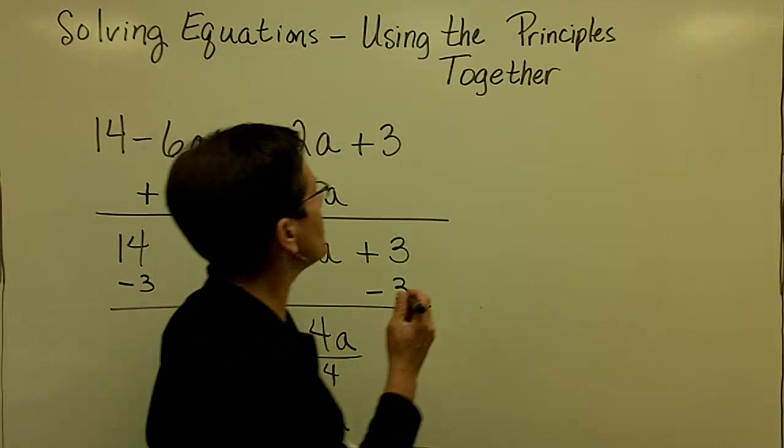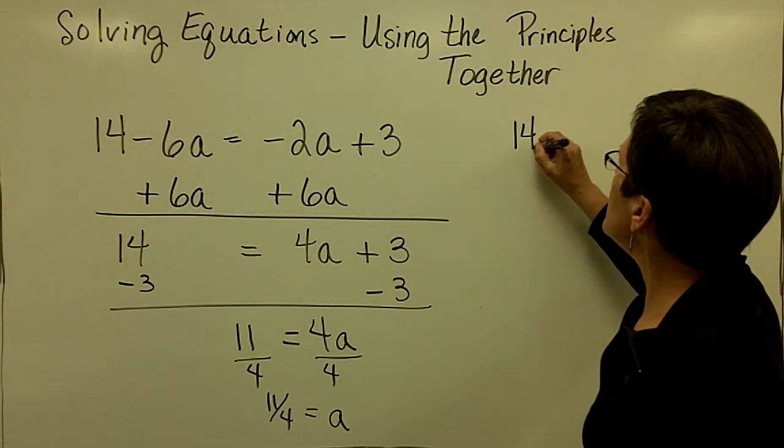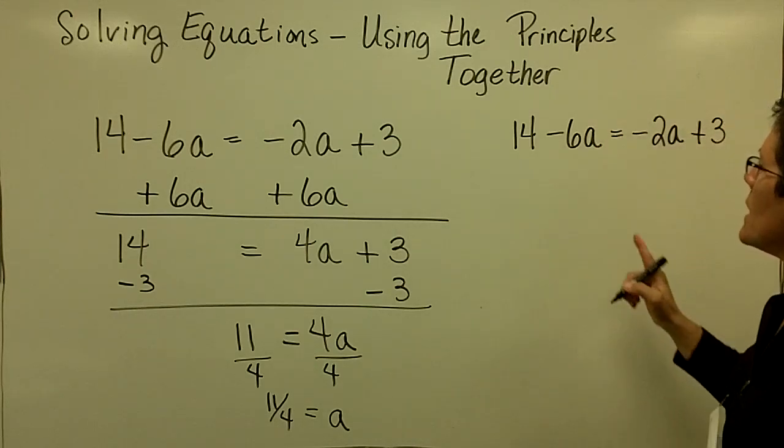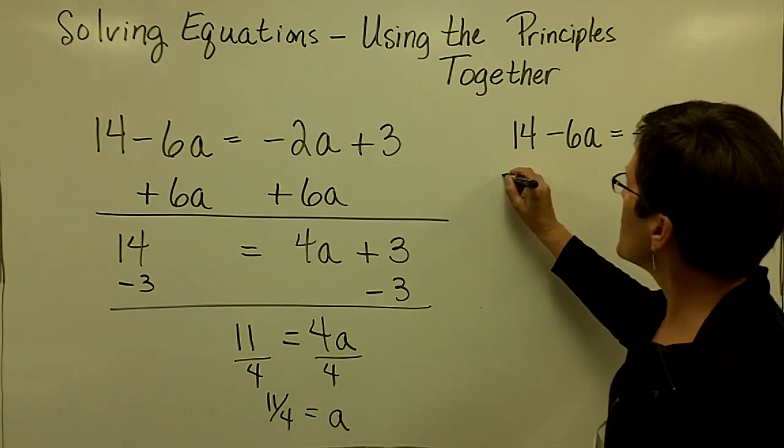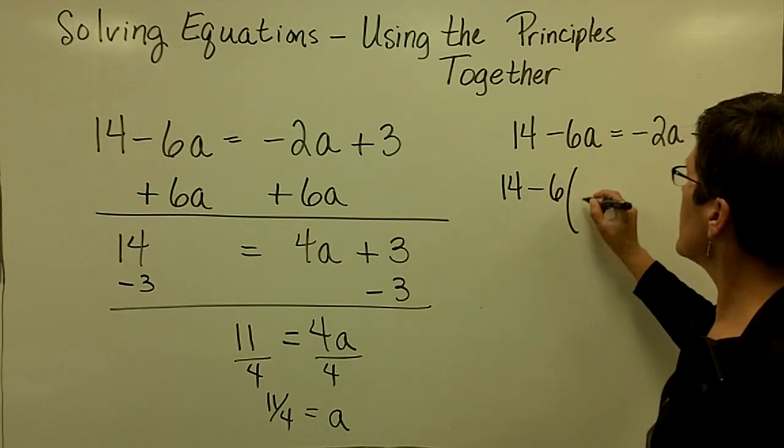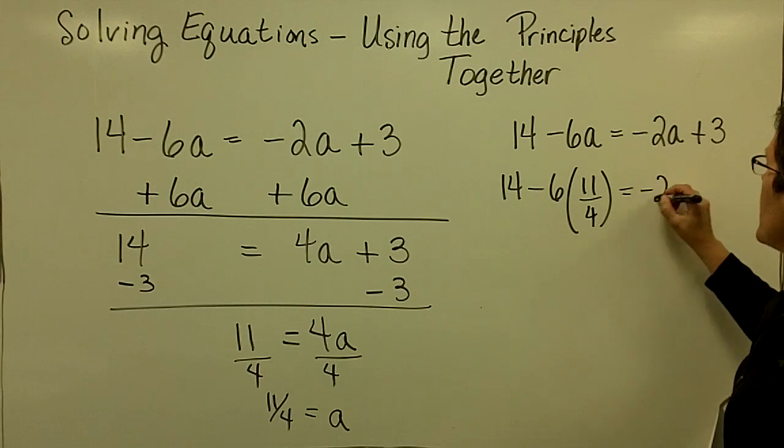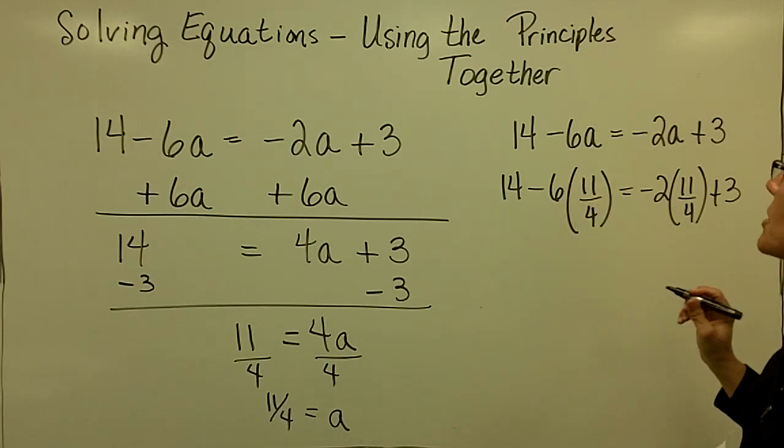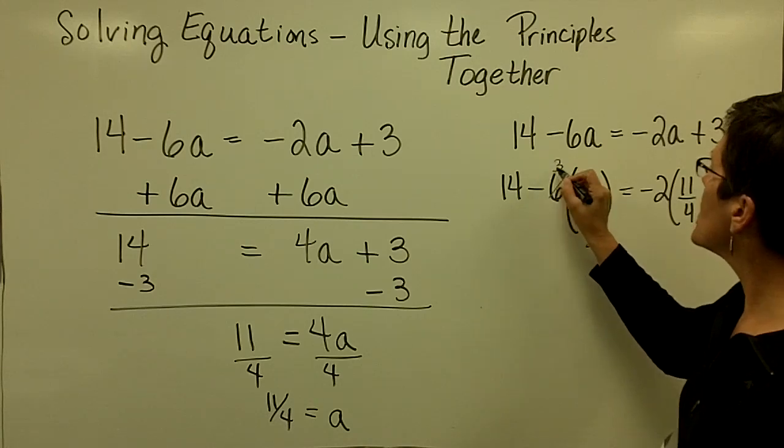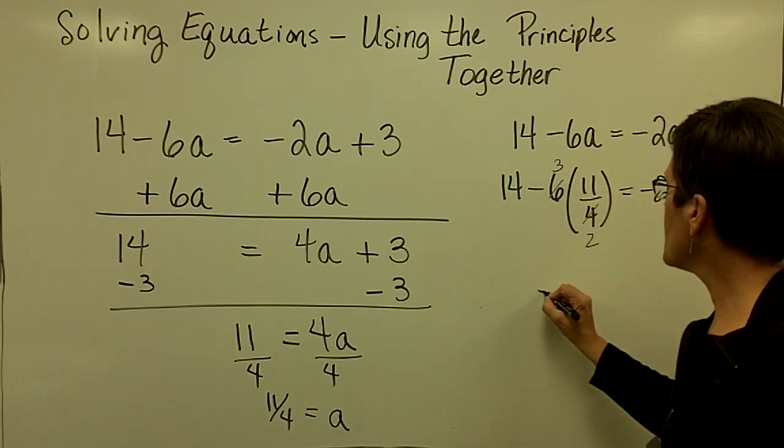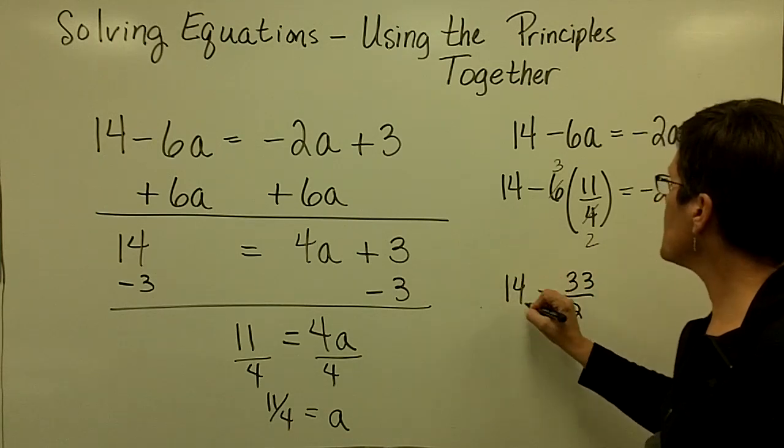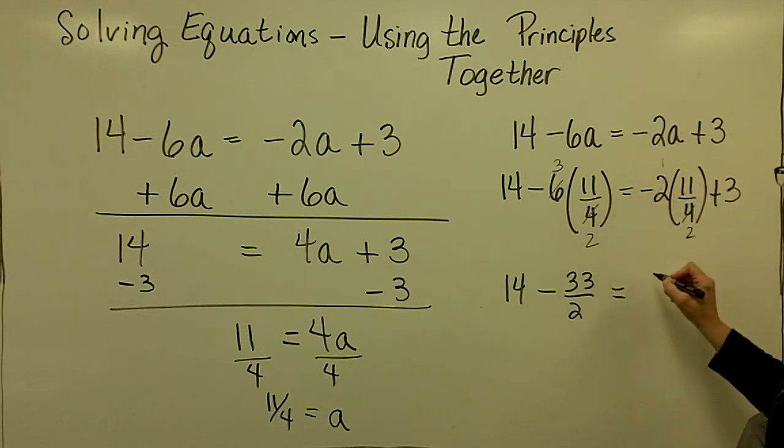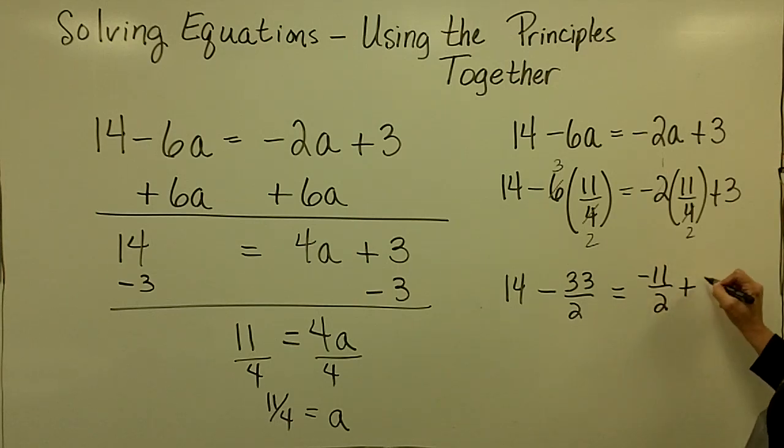Let's go ahead and take the time to check this one too. So the original problem is 14 minus 6 times a equals negative 2 times a plus 3. So anywhere I see a, I'm going to put in 11 fourths. So I have 14 minus 6 times 11 fourths. And here a negative 2 times 11 fourths plus 3. Let's multiply these together first because the order of operations says that I should. And when I multiply, I'll go ahead and reduce this first. So I have 33 over 2.